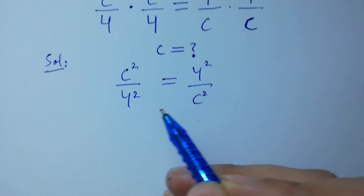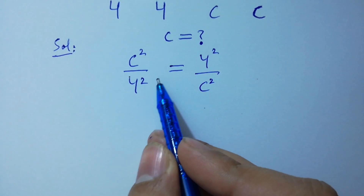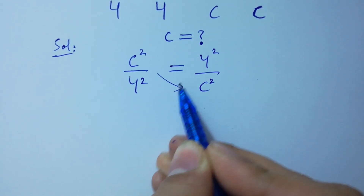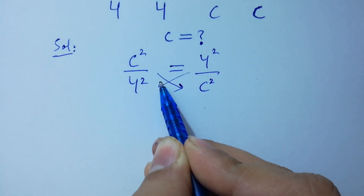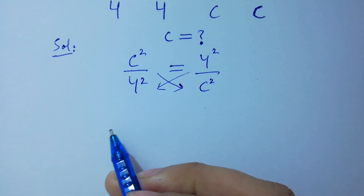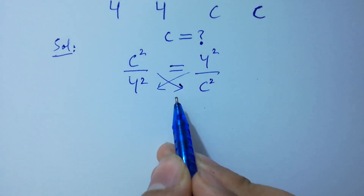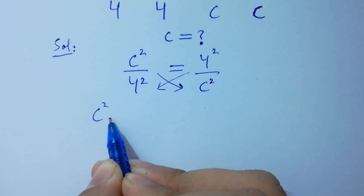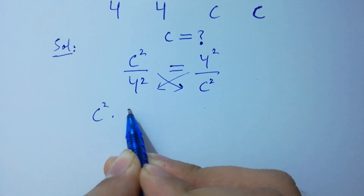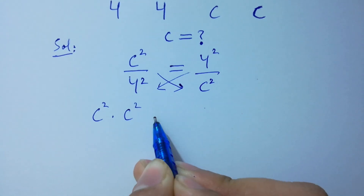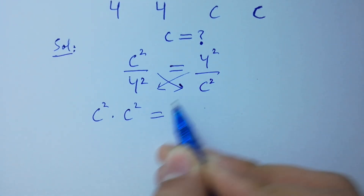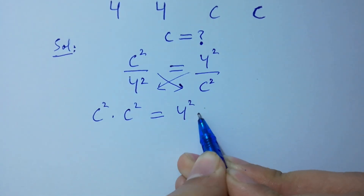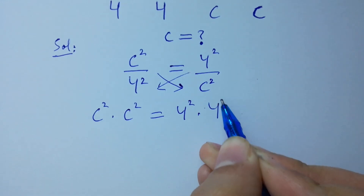In the next step, by cross multiplication, we have c squared times c squared equal to 4 squared times 4 squared.